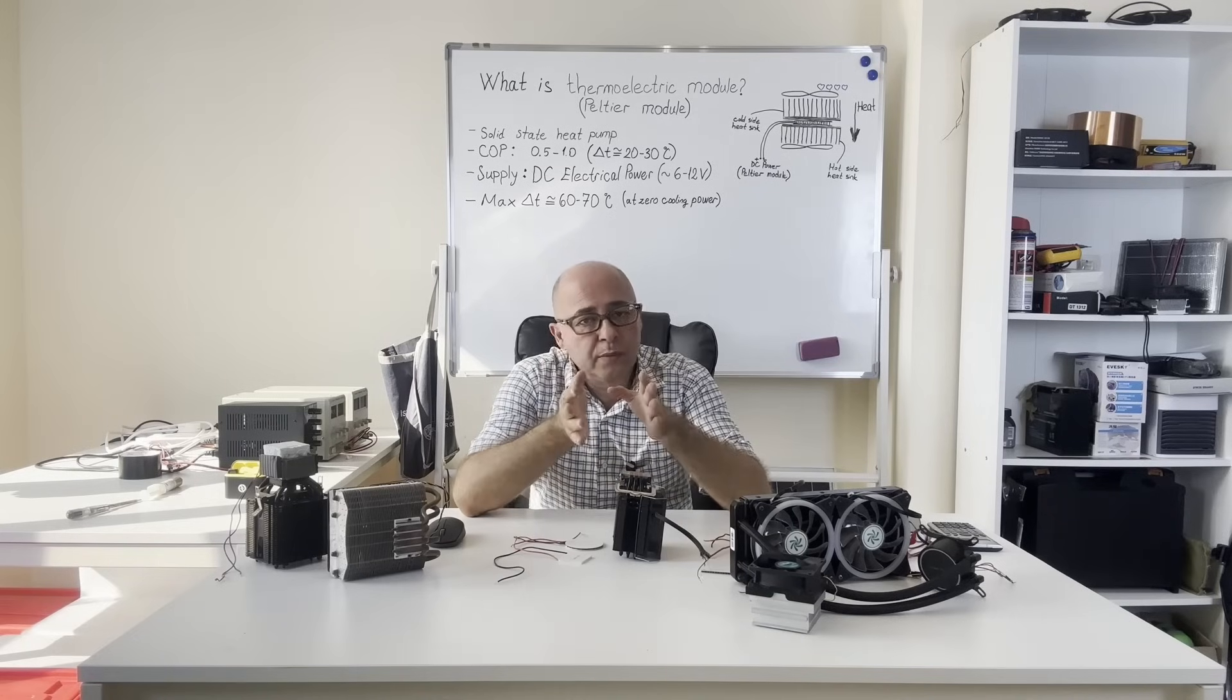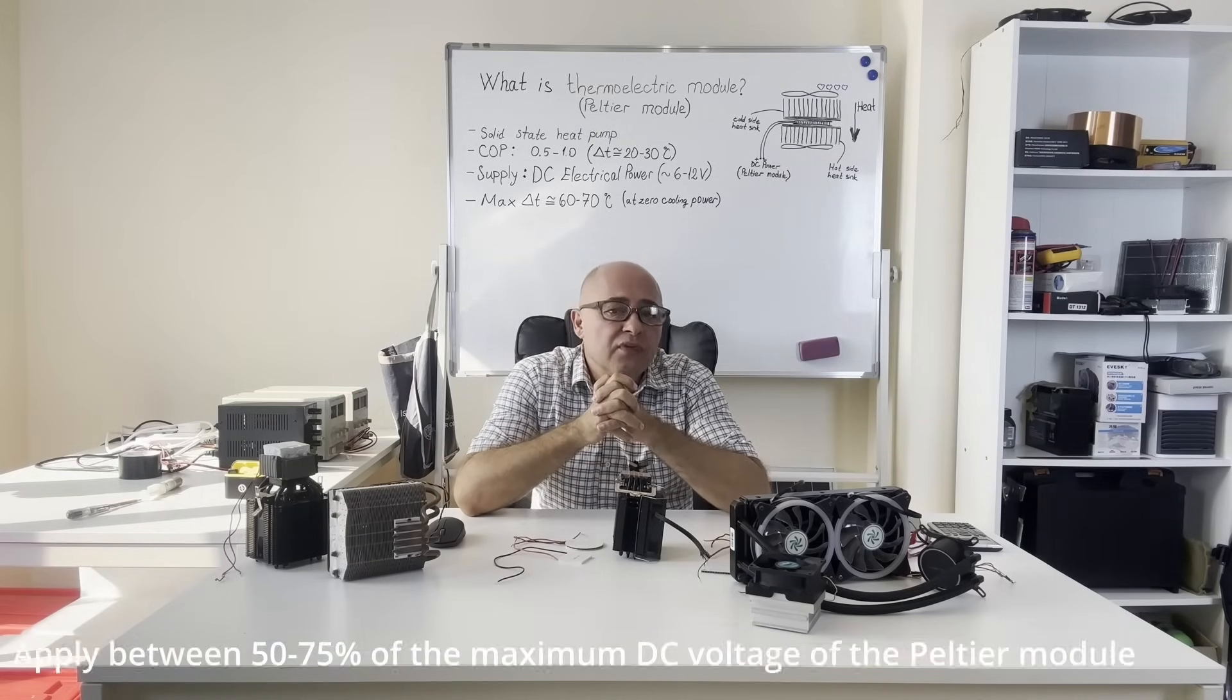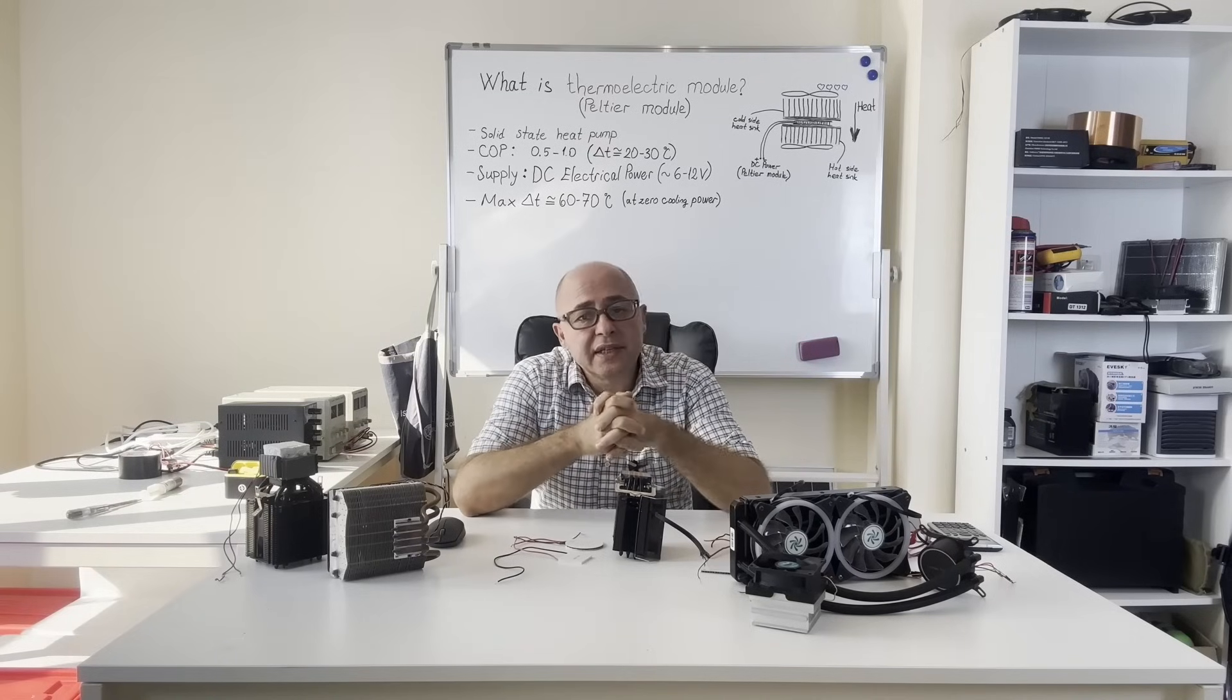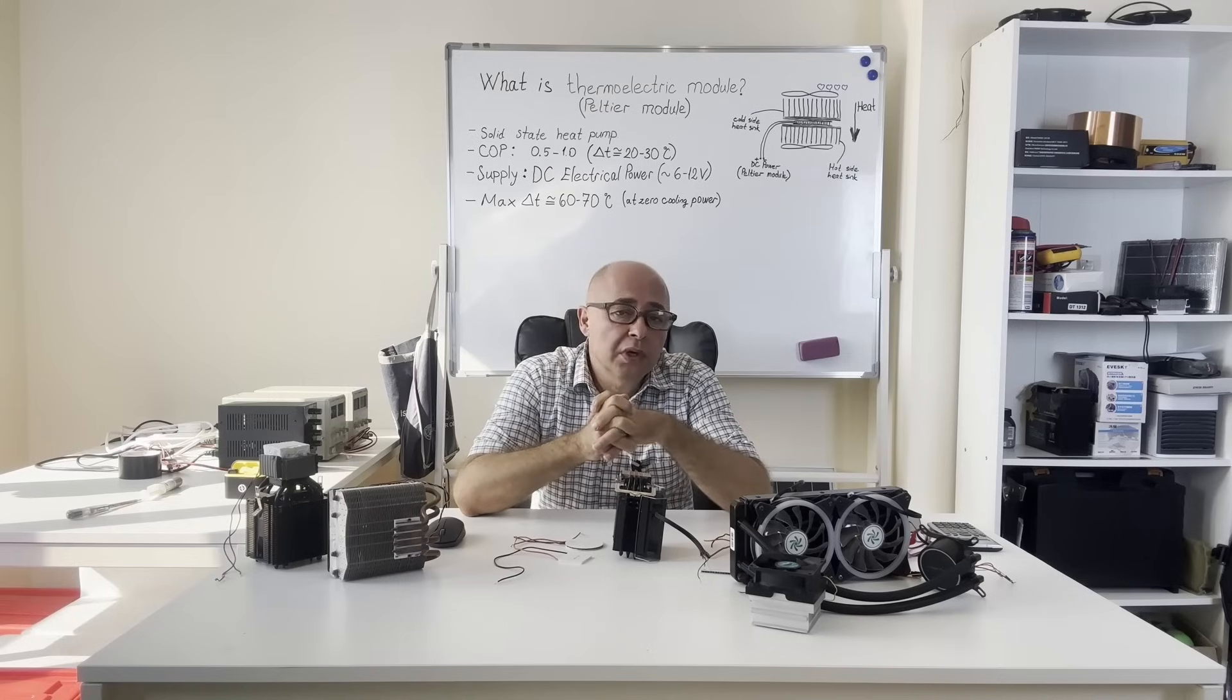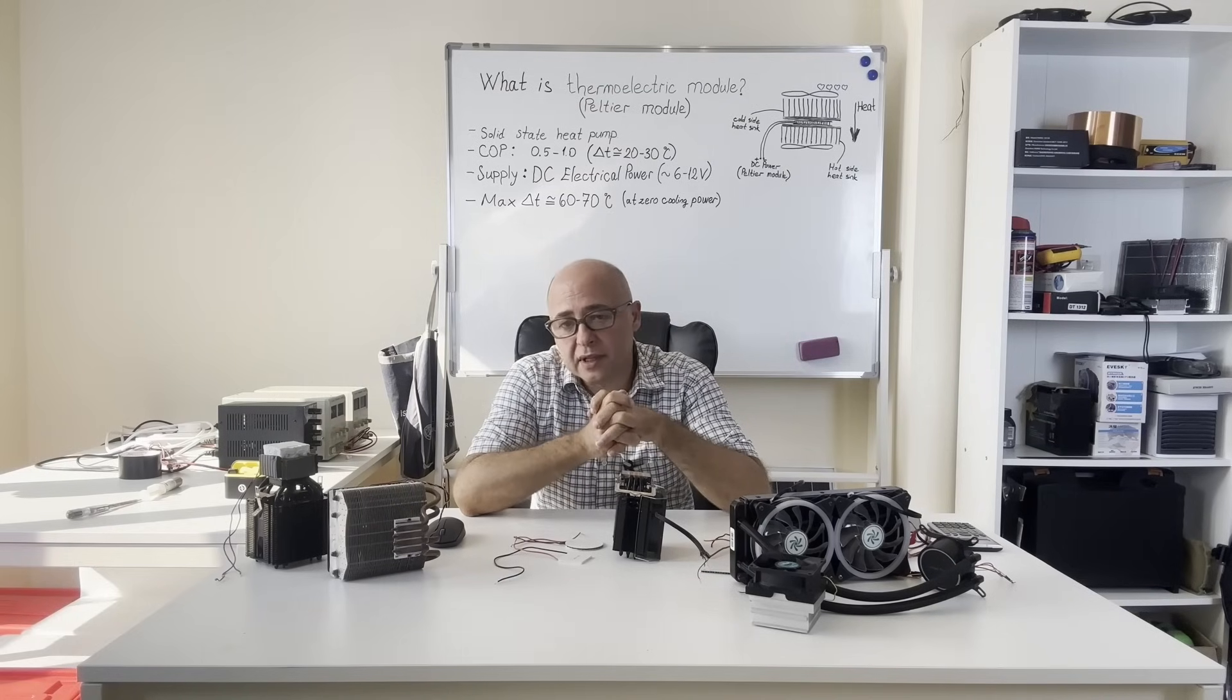The best performance is achieved when the supply voltage is between 50 to 75% of the maximum DC voltage of the Peltier module. Increasing the DC voltage up to the maximum value reduces the COP value and may sometimes cause worse results.